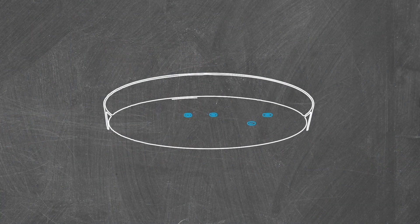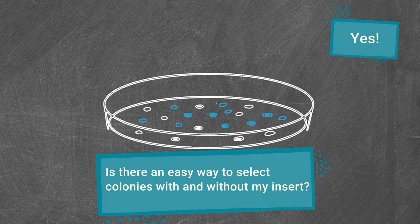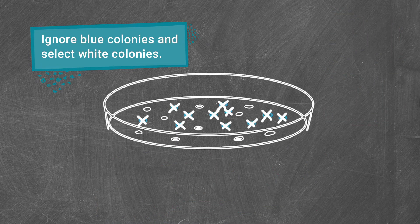Blue-white cloning can make it much easier to select transformants that contain the insert of interest. With this technique, finding the right colonies is as easy as ignoring the blue colonies and focusing on the white ones.